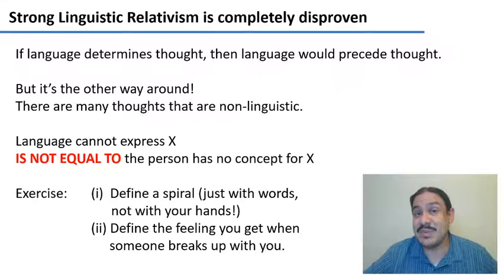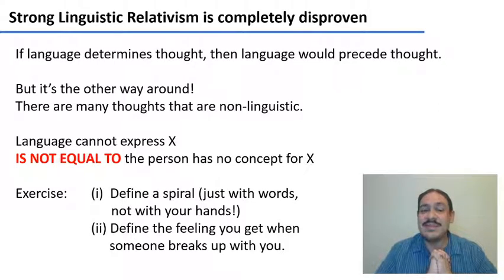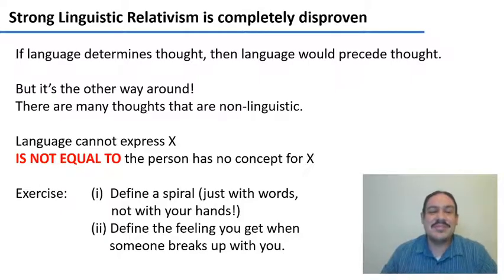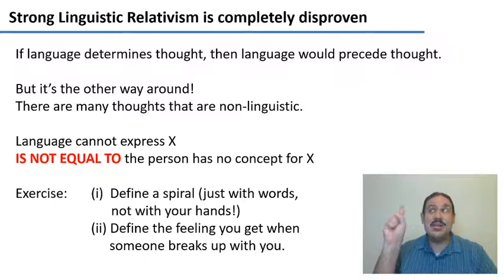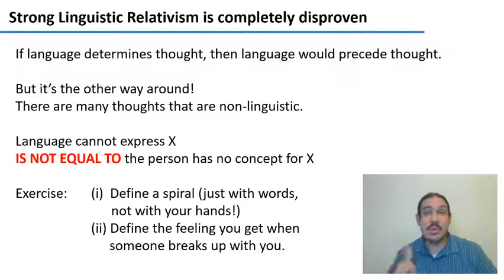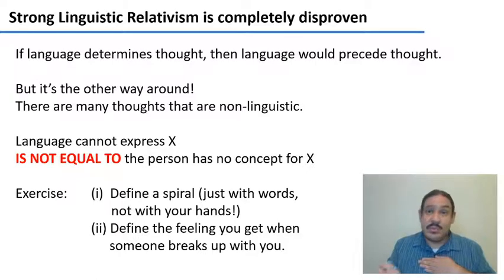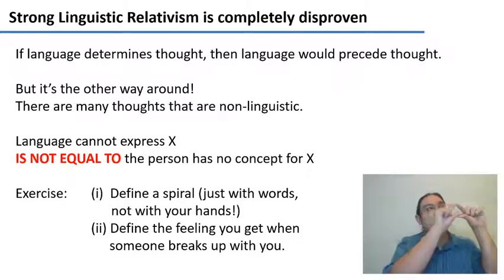I'm going to give you two exercises, then ask you to pause the video. First, define a spiral without using your hands — just with your words. Second, try to define the feeling you get when someone breaks up with you, or when something really sad happens. You can't easily do it. Unless you know a lot about trigonometry and math, defining a spiral is very difficult with words — but you can define it with your hands. Your brain knows what a spiral is; the thought is geometrical in nature. Likewise, throughout your life you've had feelings you can't put into words. You feel things first, and then you go to your language to find the right word — not the other way around.